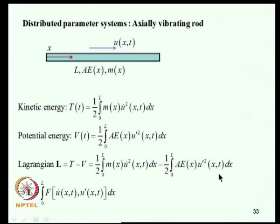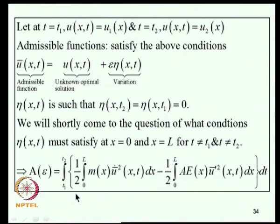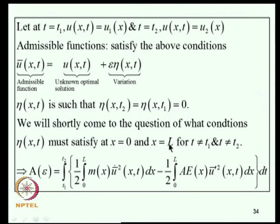The Lagrangian is L = T − V = integral of a function of U̇ and U' (prime = ∂/∂x, dot = ∂/∂t). Assuming U(x,T₁) = U₁(x) and U(x,T₂) = U₂(x), admissible functions are taken as Ū(x,t) = U(x,t) + ε·η(x,t), where η is arbitrary with η = 0 at t = T₁ and t = T₂. What happens at x = 0 and x = L is of vital importance and will be addressed.